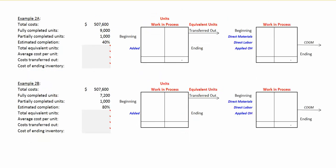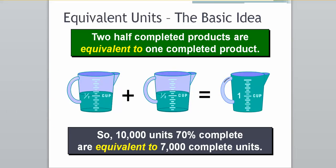Moving on to examples 2a and 2b, we need to recall the difference between fully completed units and partially completed units. Our partially completed units gave rise to the notion of equivalent units of production. Two half-completed products are the equivalent of one completed product. So if we had 10,000 units that were 70% complete, we would say it's equivalent to 7,000 equivalent units.